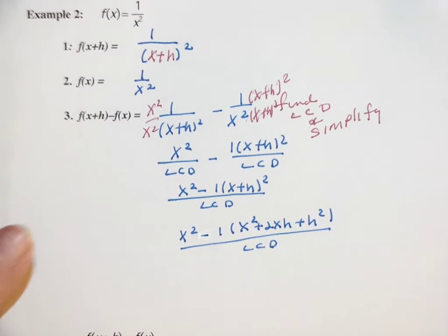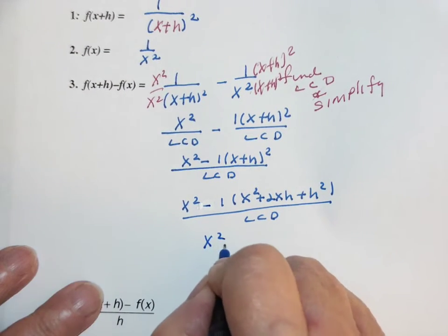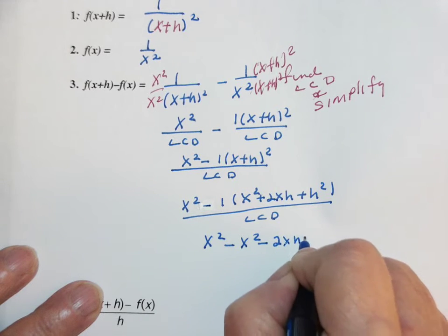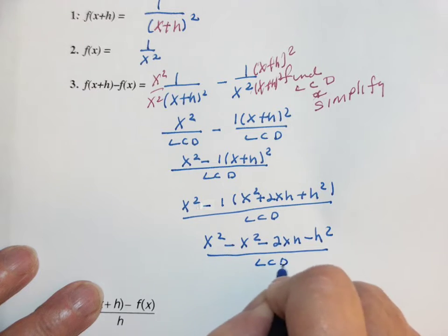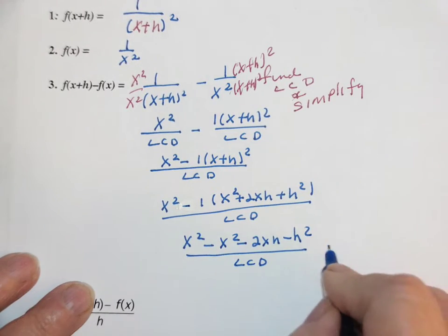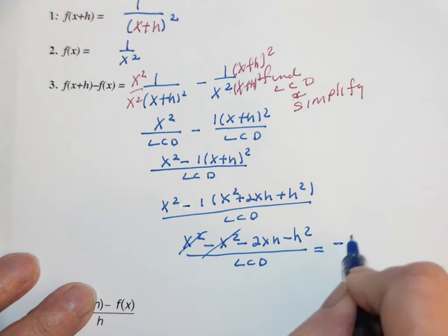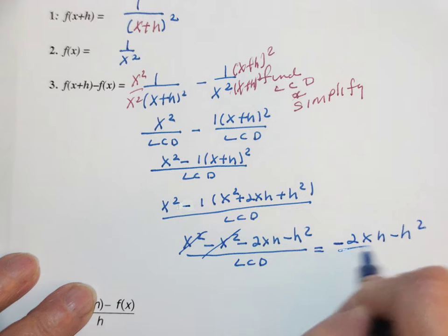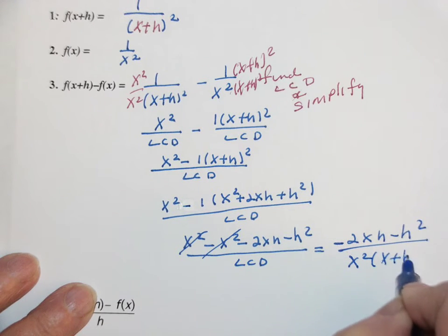Now again the numerator will have nothing but h's in it by the time I'm done. This is x² minus x² minus 2xh minus h². The x squareds add to 0. So I'm left with negative 2xh minus h² all over x²(x+h)².